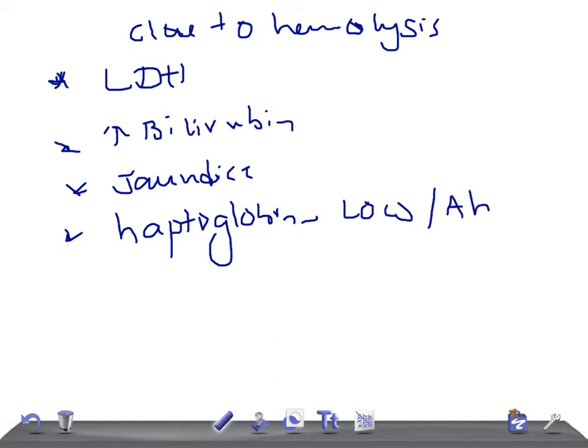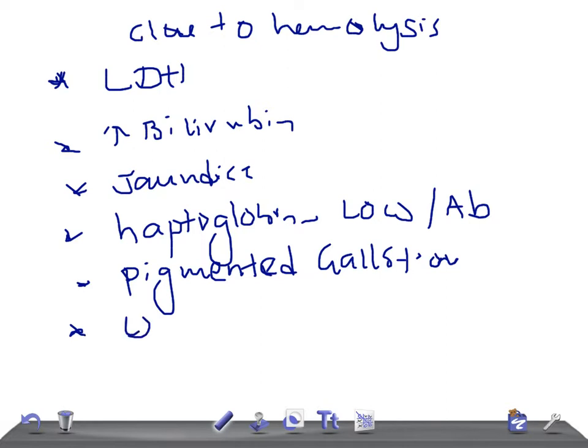Look for pigmented gallstones or any history of cholecystectomy. Then look for urobilinogen, bilirubin, or hemoglobin in urine.